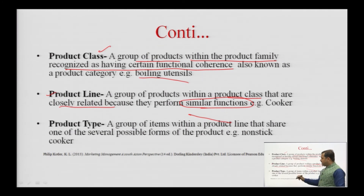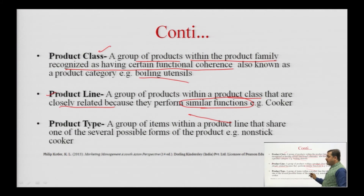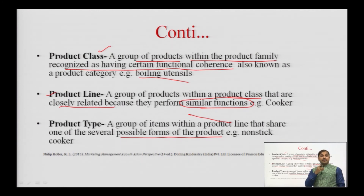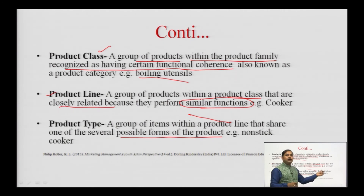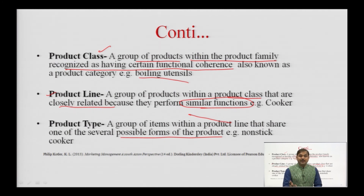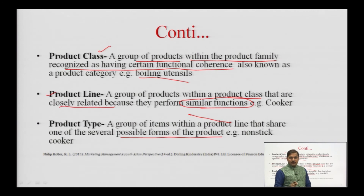The next level is product type — a group of items within the product line that share one of several possible forms of the product. The product may be available in different forms, and I will choose the form that suits my requirement. Narrowing down further: I need boiling utensils, then a cooker, and within cooker I need a specific form — perhaps a nonstick cooker, an induction cooker, or a standard cooker. My search is refined within the product line.